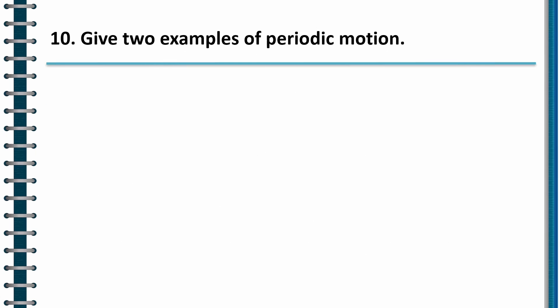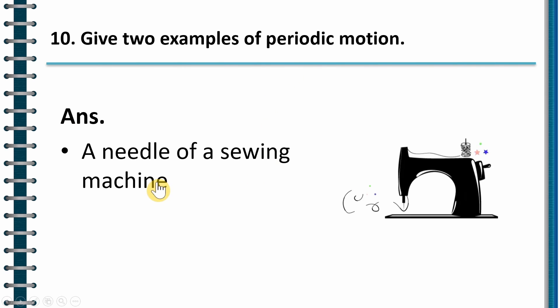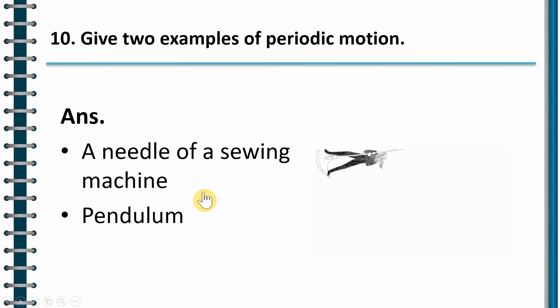So last question for the day: Give two examples of periodic motion. We have two examples of periodic motion. So first example, you can give a sewing machine, a needle of a sewing machine. As you can see here, it is going to and fro, back and forth. So this is a periodic motion. Next is pendulum. As you can see, this pendulum is going back and forth, right, to and fro motion. So again, this is also periodic motion.